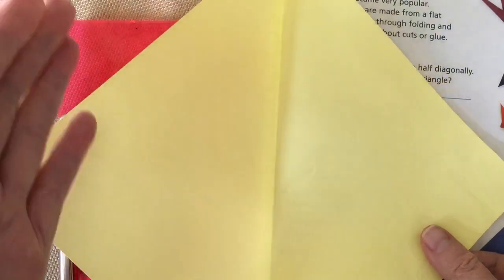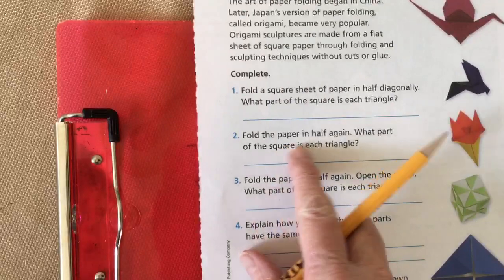What part of the square is each triangle? Well, there's two of them. Two of them make the whole, so what unit fraction would each one be? Hopefully you're coming up with one half.